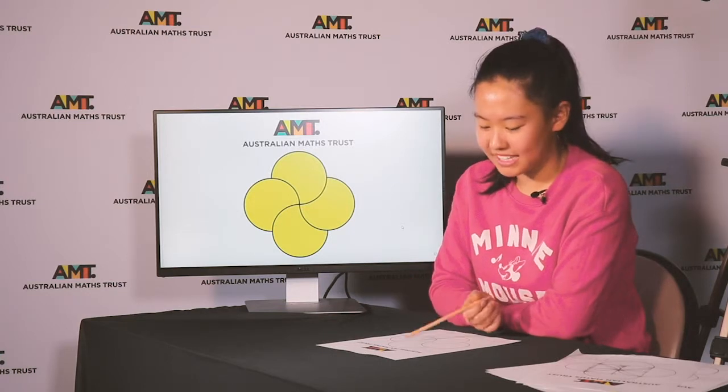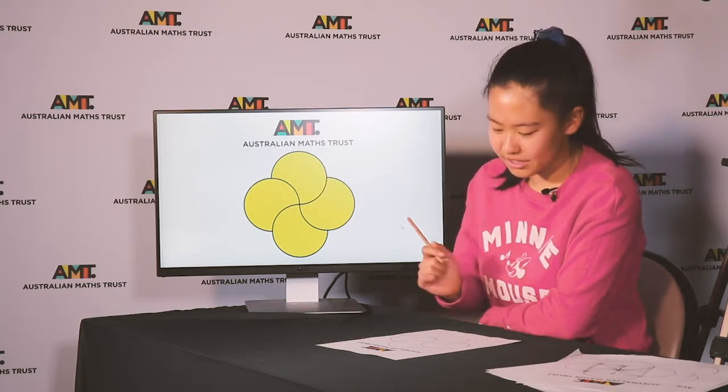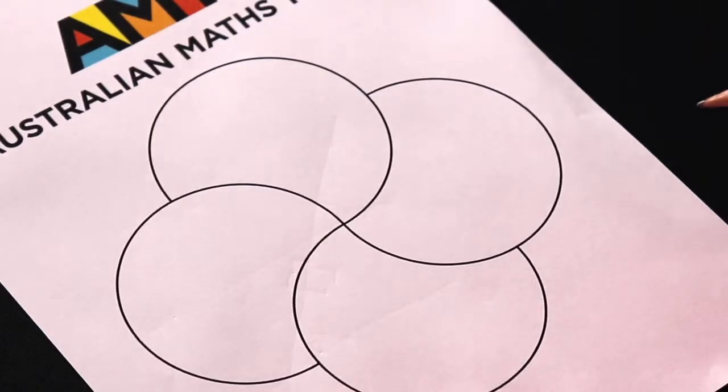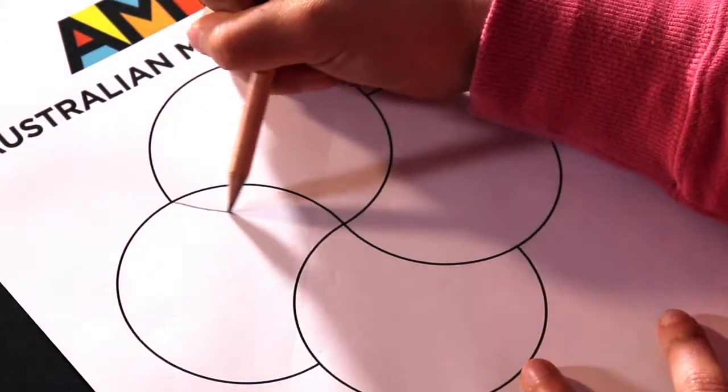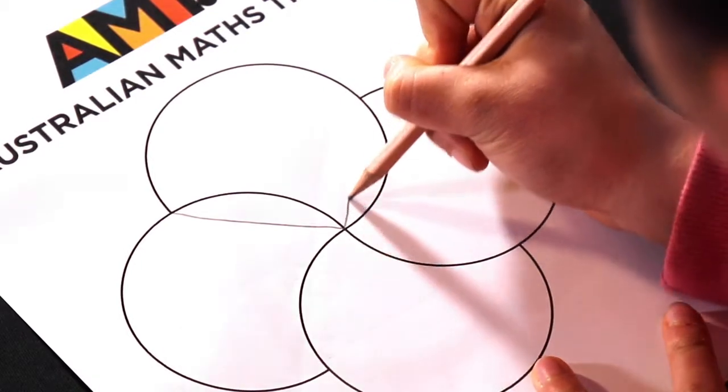So the key to any geometry problem like this is adding in construction lines. It seems to me that the easiest lines to add in would be these ones here because of rotational symmetry.